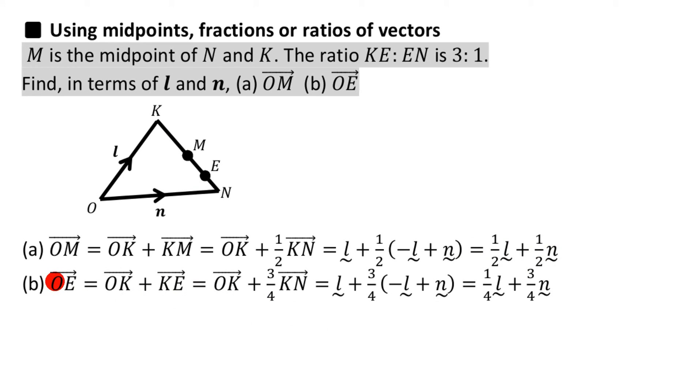Next bit, O to E. So instead of O to M, O to E. It's almost the same thing really. Where is E on this line anyway? It says the ratio KE to EN is 3 to 1. So KE to E to N is 3 to 1.